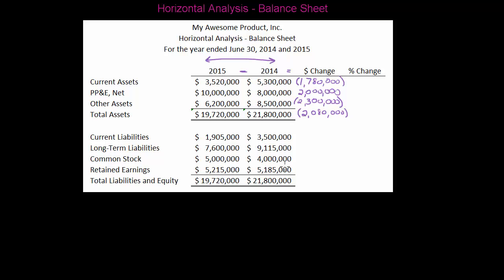We're going to do the same thing with our liabilities. If my total assets decreased by two million eighty thousand then my total liabilities did as well. Current liabilities decreased by one million five hundred ninety five thousand. Remember all we're doing is taking 2015 minus 2014. My long-term liabilities went down by one million five hundred fifteen thousand. My common stock went up by one million and my retained earnings increased by thirty thousand. Now I have all the differences — the first step is done.